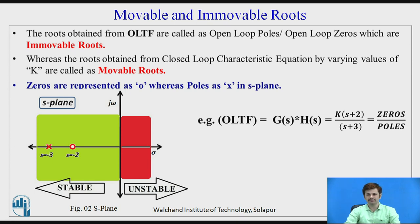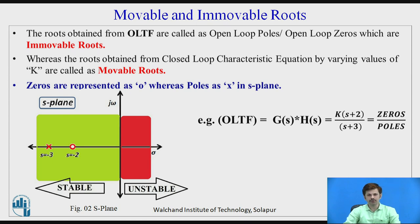Consider the example of open loop transfer function G(S)·H(S) = K·(S+2)/(S+3). Whatever is at the numerator represents zeros and whatever is at the denominator represents poles. Plotting on the S-plane gives roots at −2 and −3. As shown in figure 2, these lie on the left hand side, shown in green. Roots lying on the left hand side of the S-plane indicate a stable system; roots on the right hand side indicate an unstable system; and roots on the imaginary axis indicate a marginally stable or unstable system, depending upon the case.